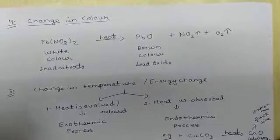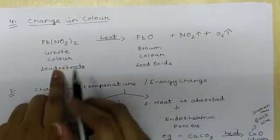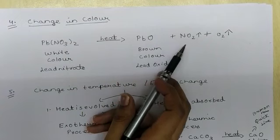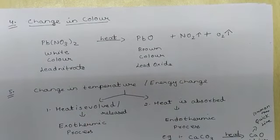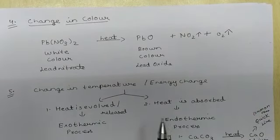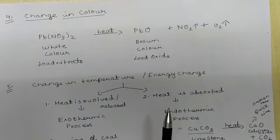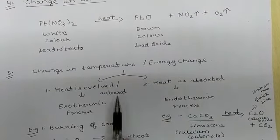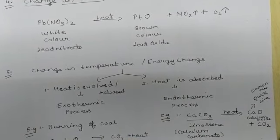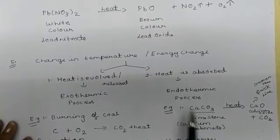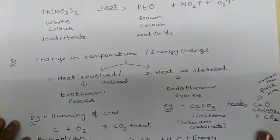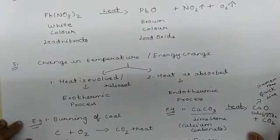So to summarize: the fourth characteristic is change in color — for example, lead nitrate (white) converts to lead oxide (brown residue) plus NO2 plus O2, showing both change in color and evolution of gas. The fifth characteristic is change in temperature or energy change — heat evolved or released is exothermic, heat absorbed is endothermic — with examples: burning of coal, respiration, and calcium carbonate decomposition. These are the five characteristics observed during a chemical reaction.